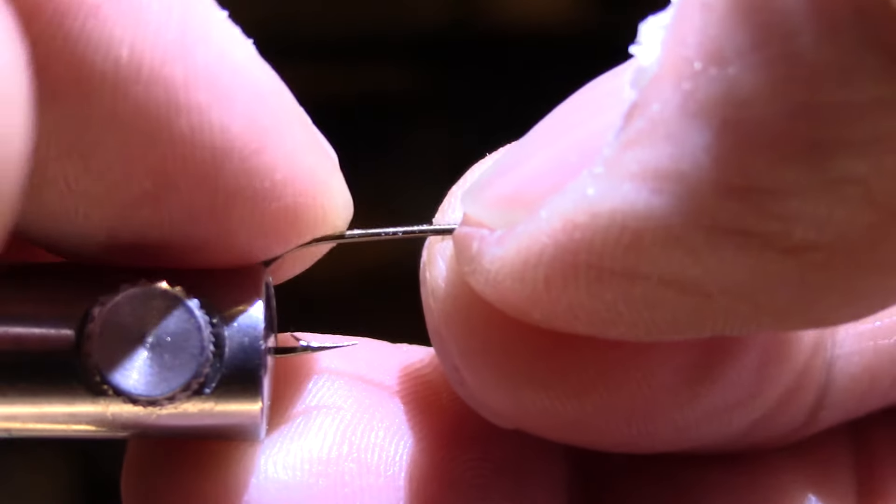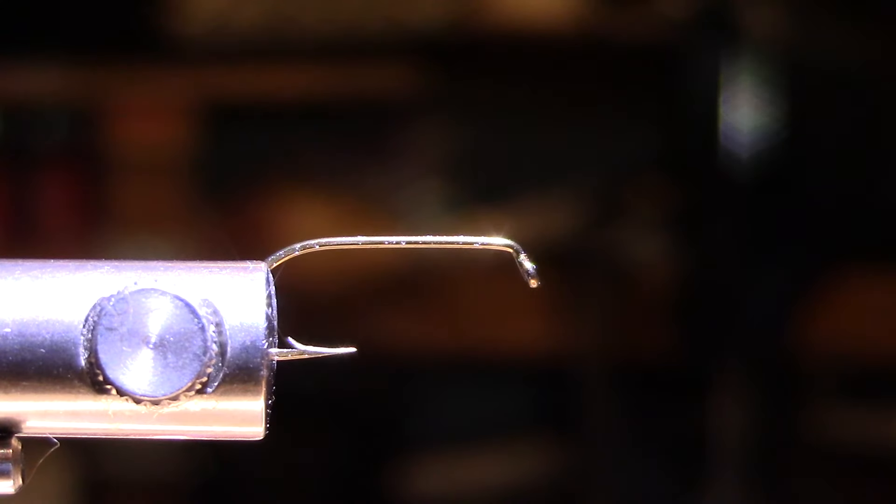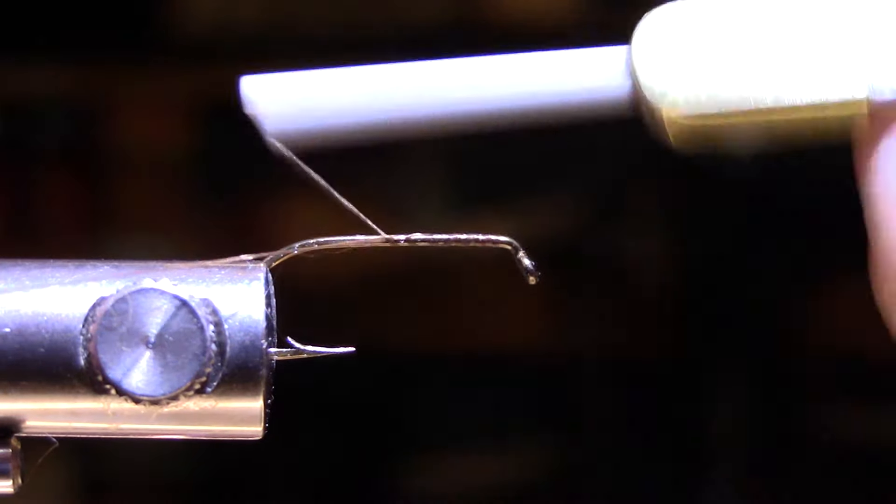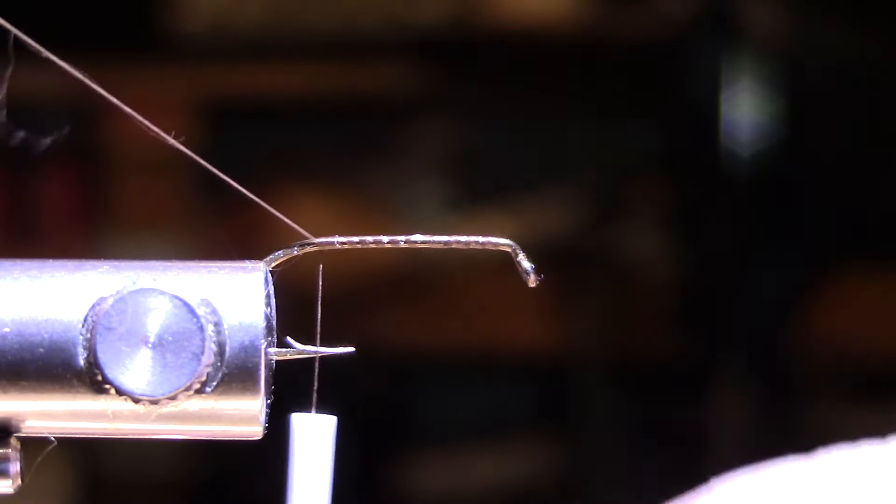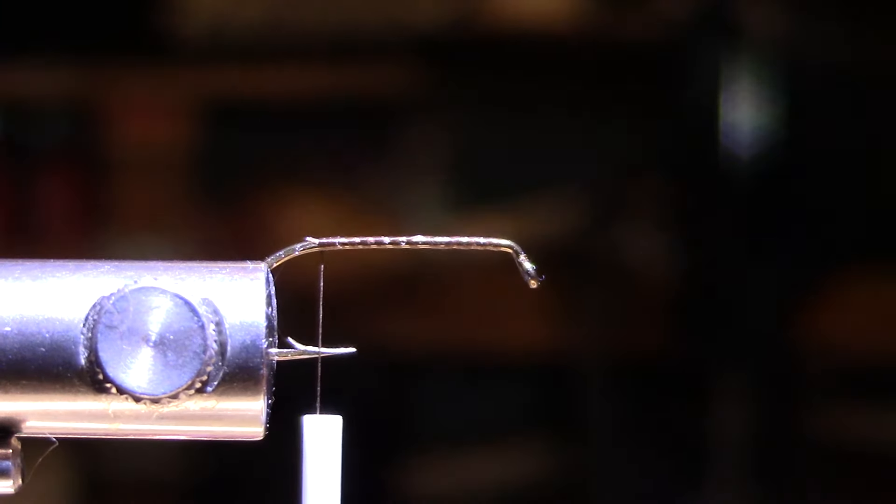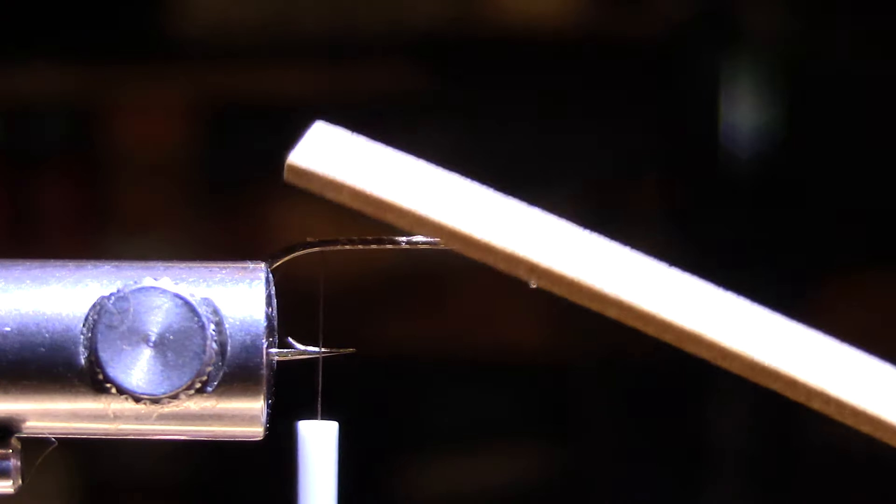Okay, now I'm going to show you a second version here which should float much longer. Same hook, I'm using a size 10. I'm going to start my thread and I'm going to bring that right again, doesn't seem to matter what fly, between the point and the barb. Clip the excess. So I'm using a foam body here, so I'm using just regular 2mm craft foam, this is in a tan color.